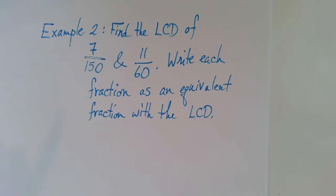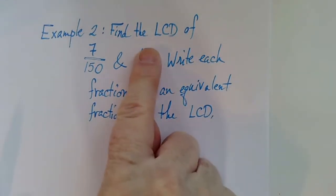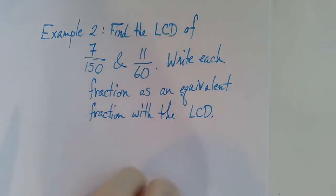All right, let's look at example two. We want to find the least common denominator, or LCD, of 7 over 150 and 11 over 60. And then we want to write each fraction as an equivalent fraction using the least common denominator as its denominator.